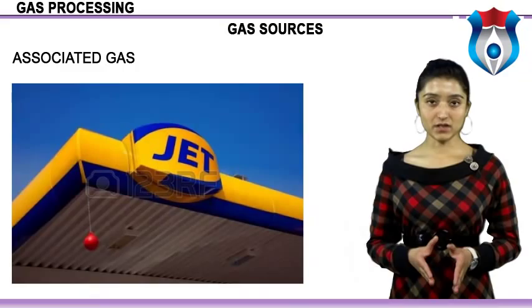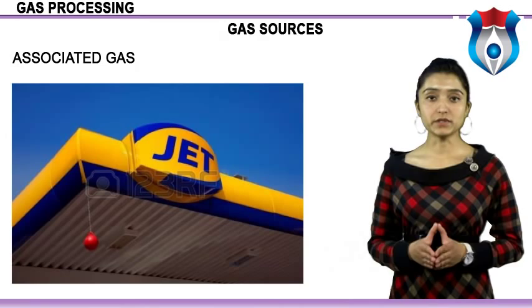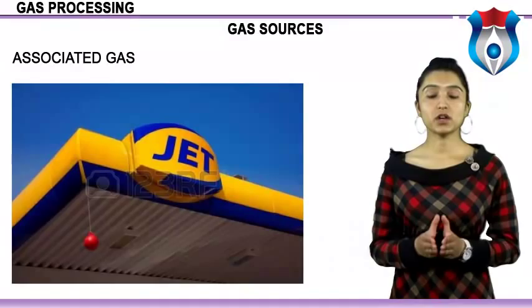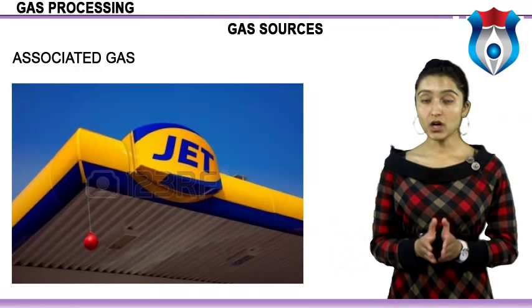When referring to natural gas liquids in the gas stream, gallons per thousand cubic feet is used as a measure of hydrocarbon richness. Natural gas can be considered rich (five or more gallons of recoverable hydrocarbons per thousand cubic feet) or lean (less than one gallon per thousand cubic feet); however, these terms are not precise indicators of gas quality but only indicate the relative amount of NGLs in the gas stream.